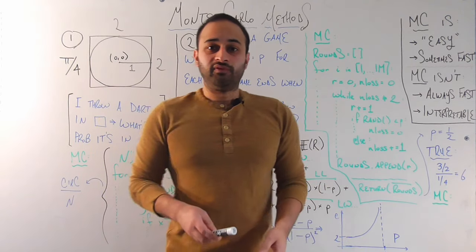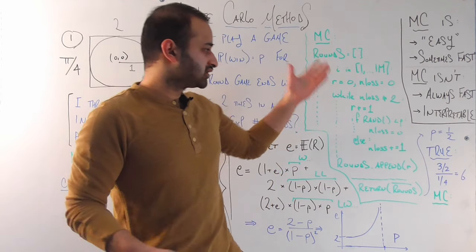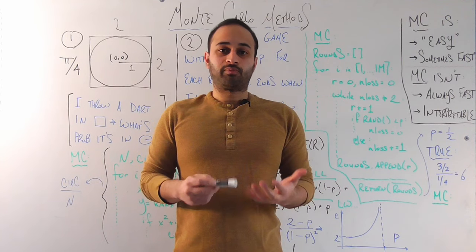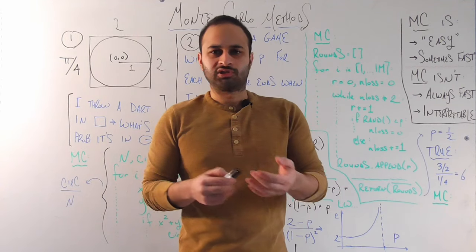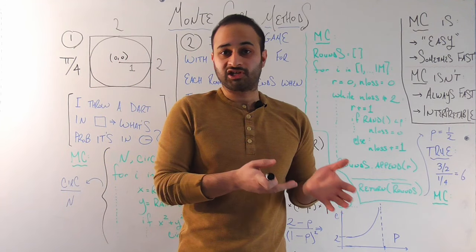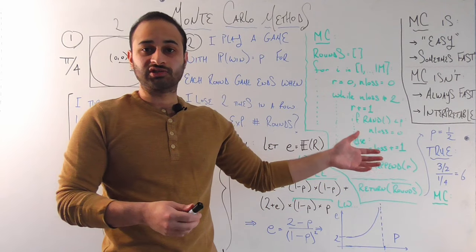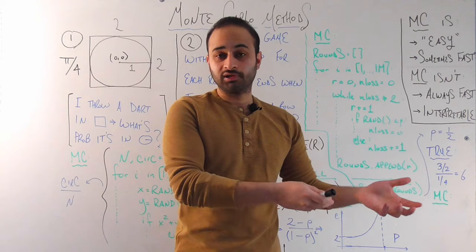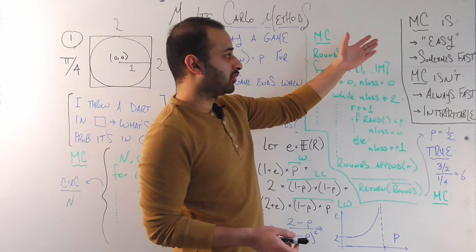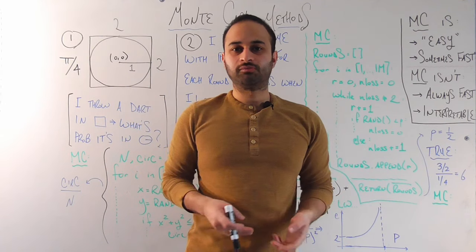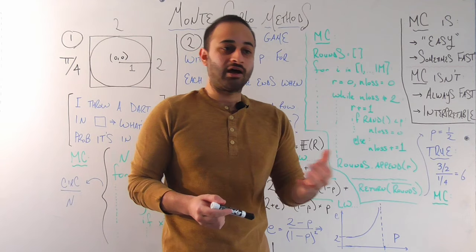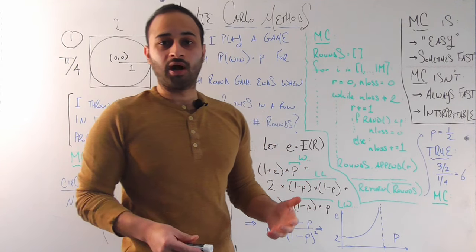Monte Carlo is 'easy' — even if you haven't thought of a clever analytical solution, you can just code it and get the answer to some arbitrary degree of precision. Even if it's a problem in a subject area you're not familiar with, like genetics or stock trading, as long as you have the rules of the problem, you don't need to be a subject matter expert. You can just code a solution and get the answer anyway. I put 'easy' in quotes because sometimes the code does get kind of long and out of control, and it can be easier than going through the calculus or linear algebra needed to solve the problem analytically.